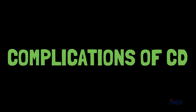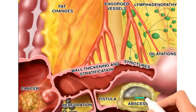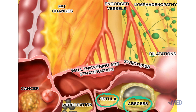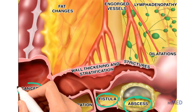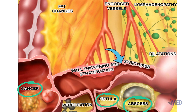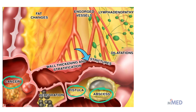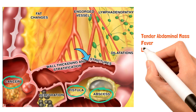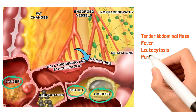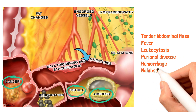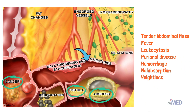Complications of Crohn's disease include abscesses, fistulas, colonic cancer, and fibrotic strictures when the entire bowel wall is swollen or inflamed, narrowing the lumen. These complications lead patients to present with a tender abdominal mass, fever, leukocytosis, perianal disease, hemorrhage, malabsorption, and weight loss.